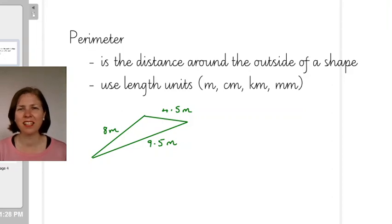Hi Year 7s and welcome to maths class. Today we're looking at perimeter and I know that we've already talked a little bit about units of length. So perimeter we have to remember is a distance, so that means it's also a length and we use length units like meters, kilometers and centimeters.